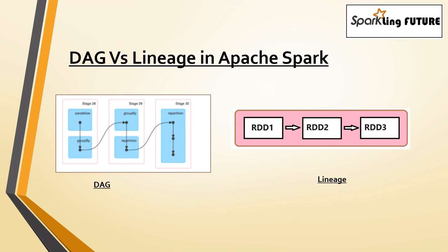So if you see the diagram here, this is DAG and this is lineage. DAG, as we have seen in the previous video, is a representation of a Spark job as a series of task dependencies. It provides an optimized execution plan for data processing tasks in Spark, enabling efficient parallelism and eliminating unnecessary computations.